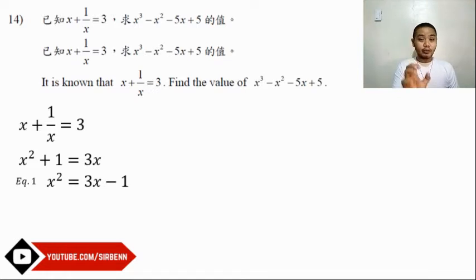Remember that equation because we'll use it to find the value of x³ - x² - 5x + 5. Next, I'll multiply both sides by x to obtain the second equation. The second equation is x³ = 3x² - x. We're going to use these two equations to solve this problem.